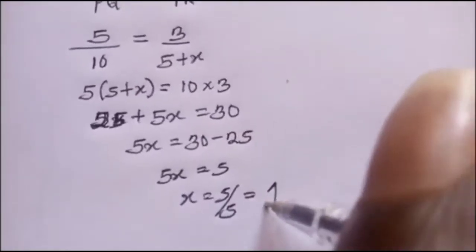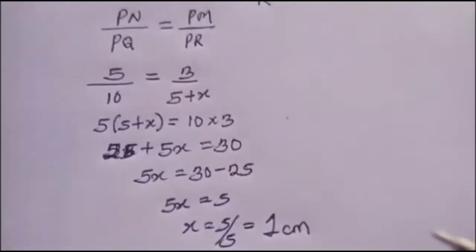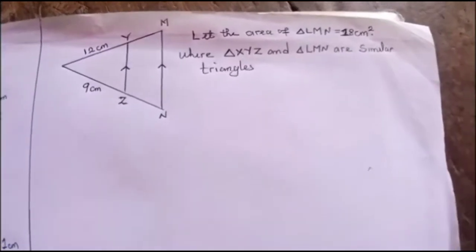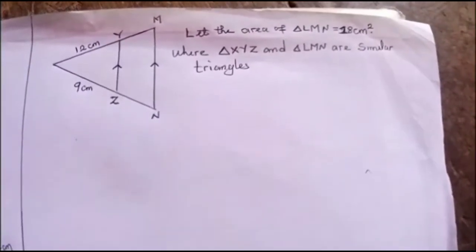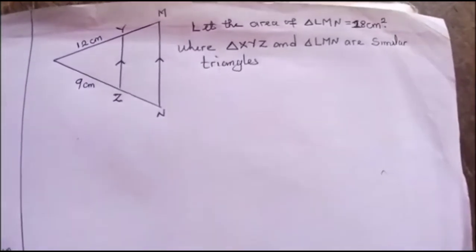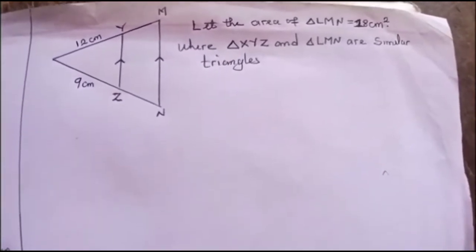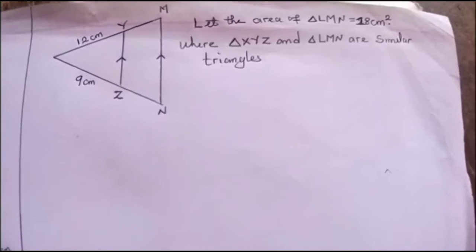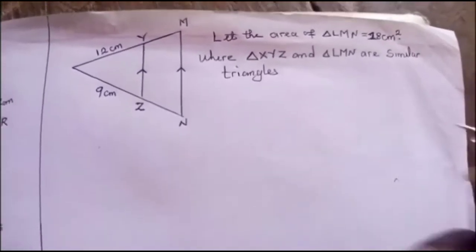So 1 centimeter. Let's see this diagram. Let the area of triangle LMN be 18 centimeter square with triangle XYZ and triangle LMA being similar triangles.